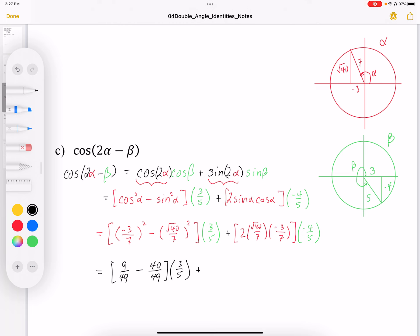Times 3 over 5 plus. Here I'm just going to multiply everything together. So times on top. Just keeping track of my signs first is negative and negative. So that's a positive. 2 times 3 times 4 is 24. Root 40. And that's all over 7 times 7 times 5. Or 49 times 5 is 245. So that's a whole expression there.